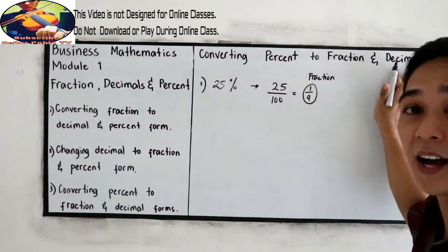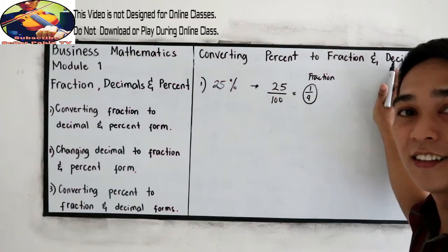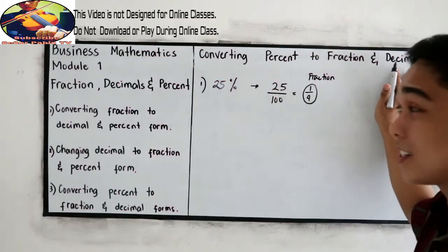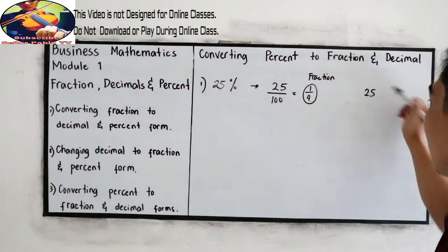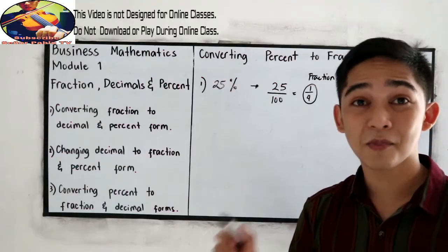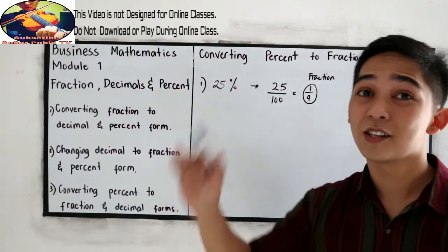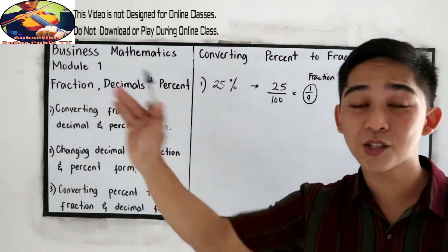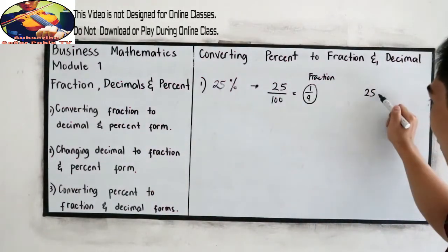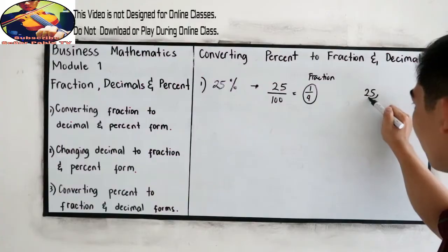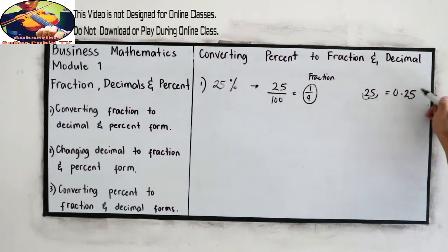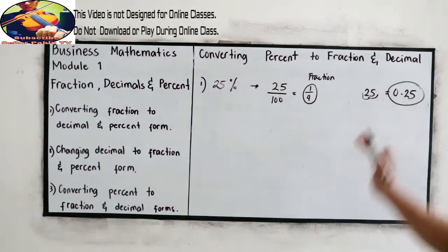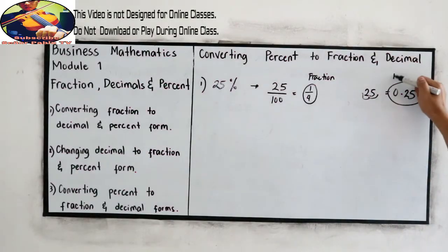For the decimal, it's very easy. We have 25 — just move the decimal place twice to the left: 1, 2. So 0.25. That would be our decimal.